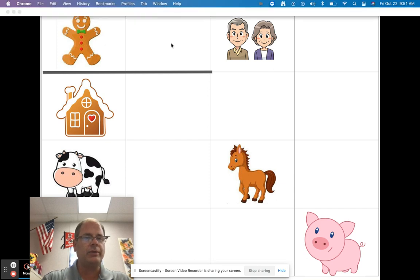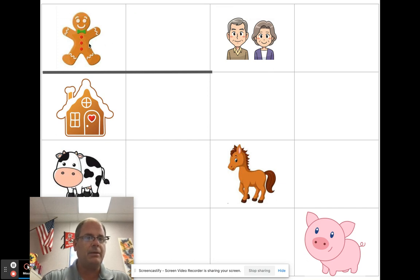So you might glue a straight arrow from the gingerbread man to the man and woman, and then you might turn and go down to the pig and turn and go to the horse and go straight to the cow and then turn and go home or something like that.